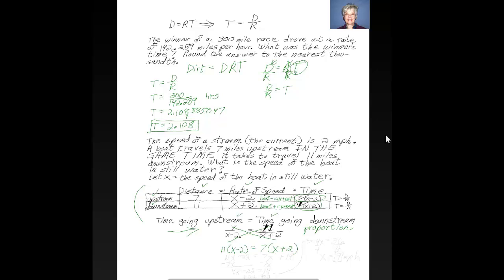So we'll have 11 times x minus 2 equals 7 times x plus 2. Now, just solve the equation for x, and you'll have the speed of the boat in still water. Let's do it. 11x minus 22 equals 7x plus 14. I'll subtract 7x from both sides. That'll give me 4x minus 22 equals 14. Now, I'll add 22 over to the other side, plus 22 plus 22, and I'll continue the equation over here on the right. I'll have 4x equals 36. Then I'll divide both sides by 4.